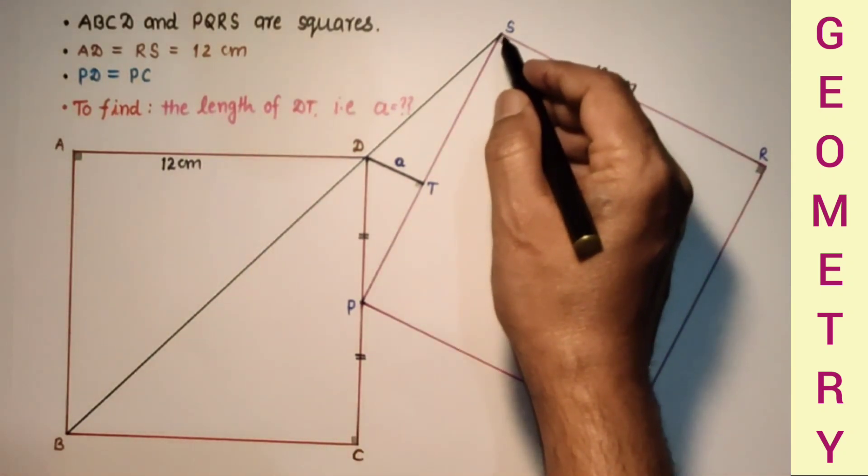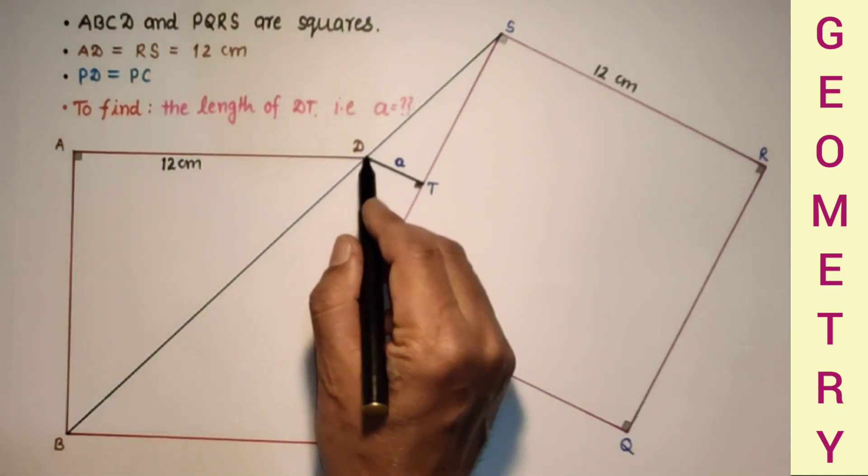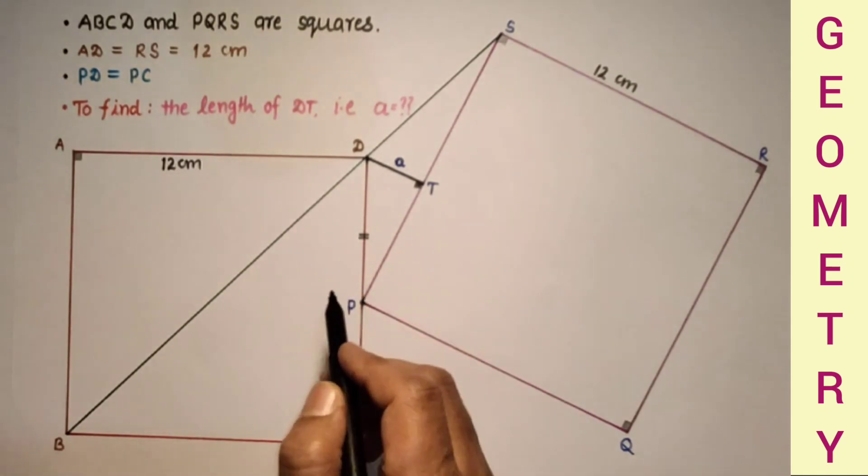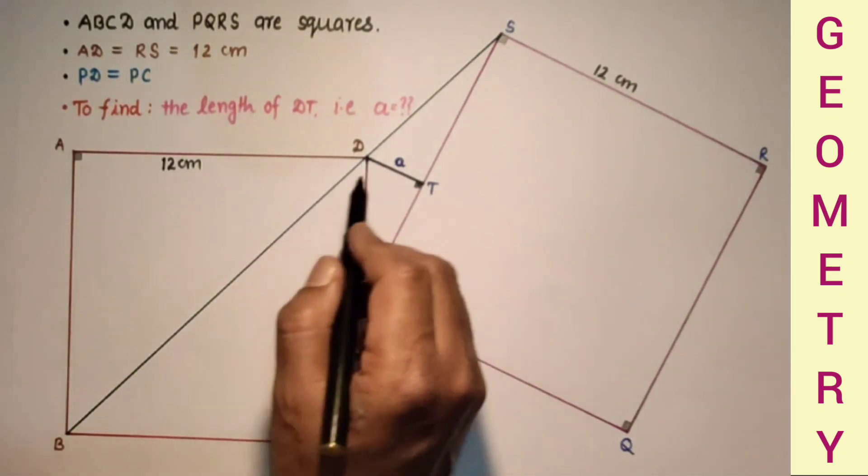This vertex lies on the diagonal extended. From this point D, DT is drawn perpendicular. And we have to find the length of this DT which is A.